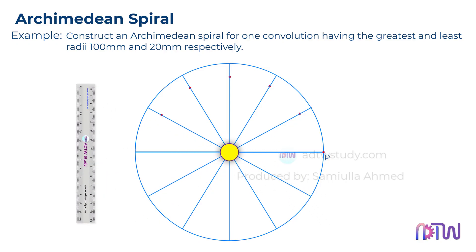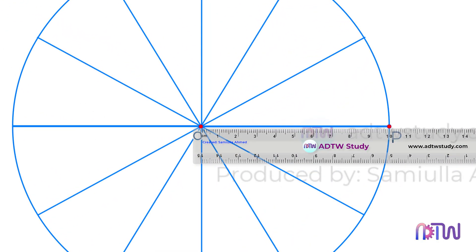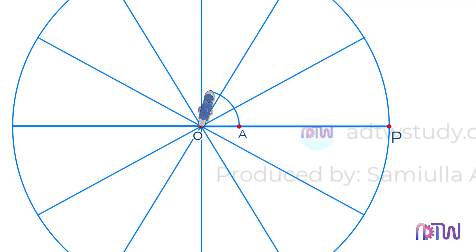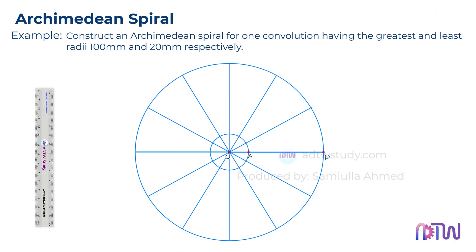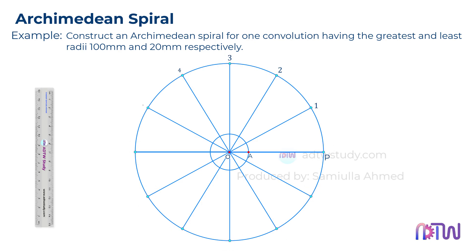This O point will be our center point for the spiral. Since the least radius is 20 mm, mark a point at a 20 mm distance from point O. Label this point as A, and using distance OA as the radius, draw the smaller circle. Label these points as 1, 2, 3, and so on.